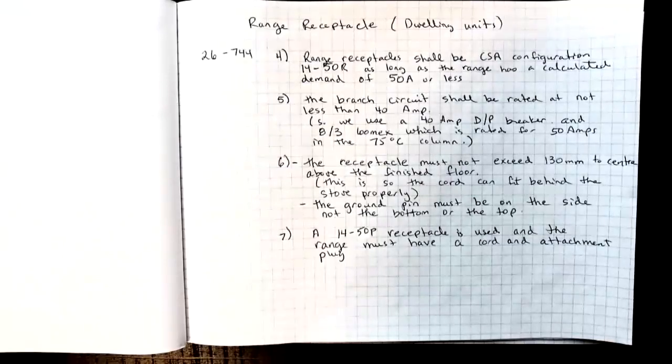Sub-row 6: the receptacle must not exceed 130 millimeters to the center when measured above the finished floor. This is so that the cord can fit behind the stove properly.